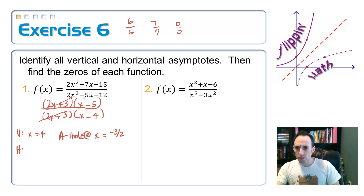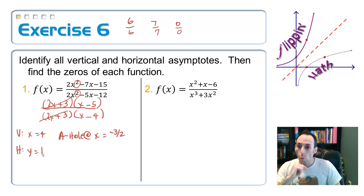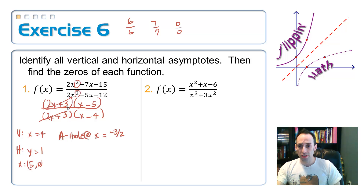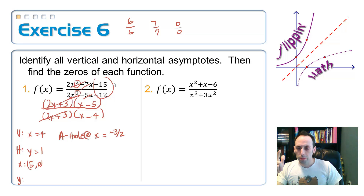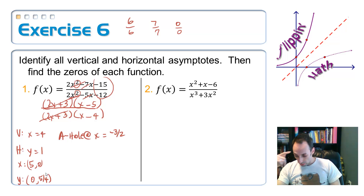For the horizontal asymptote, the degrees are the same so it's the ratio of leading coefficients: 2 divided by 2 gives y = 1. The x-intercept is where the simplified top equals 0: at (5, 0). There's no x-intercept at x = -3/2 because it cancelled with the bottom — there's a hole there. For the y-intercept, plugging in 0 gives the ratio of constant terms: negative 15 divided by negative 12, which simplifies to 5/4. So the y-intercept is (0, 5/4).